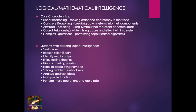The next is logical-mathematical intelligence. Core characteristic is linear reasoning — seeking order and consistency in the world. These are the mathematicians of the world. Concrete reasoning — breaking down systems into their components. Abstract reasoning — using symbols to represent concrete ideas. Causal relationships — identifying cause and effect within a system. These are the engineers, the scientists. Complex operations — performing sophisticated algorithms. Students with strong logical intelligence seek order, reason scientifically, identify relationships, enjoy testing theories, excel at calculating numbers, solving problems instinctively.